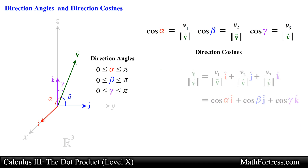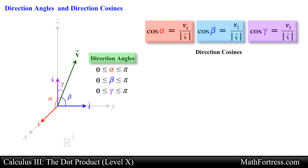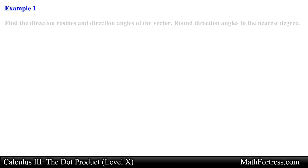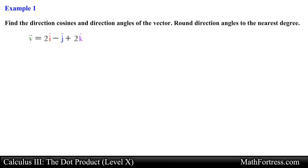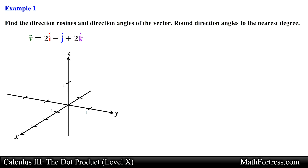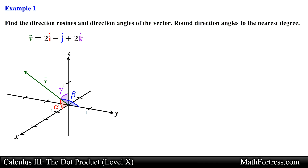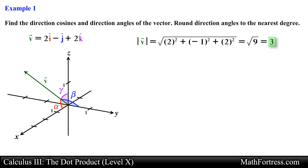Alright, let's go over a couple of examples and illustrate how to find direction angles and direction cosines. Find the direction cosines and direction angles of the vector; round direction angles to the nearest degree. Here we are given a vector in space written in unit vector form, and we are asked to find the direction cosines and direction angles of the vector. Let's first find the magnitude of vector v using the components of the vector, and simplifying we obtain the following for the magnitude of vector v.